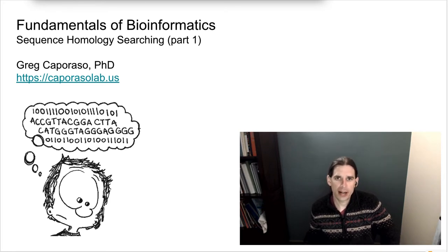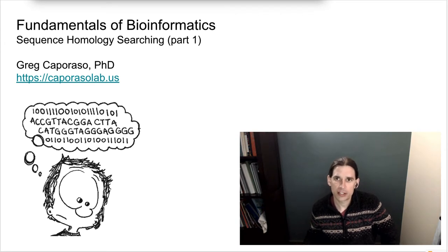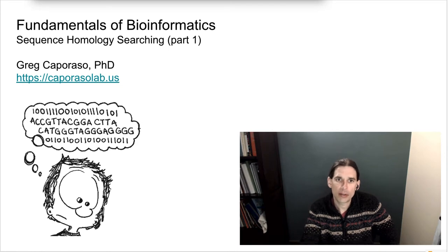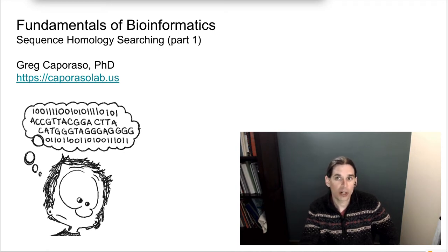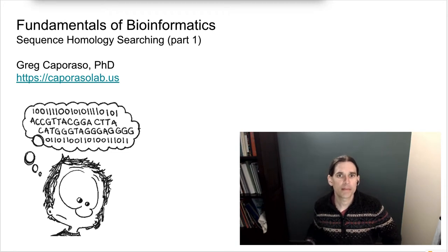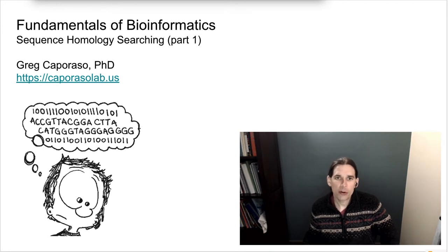We're going to begin by looking at an algorithm that does a complete sequence homology search against a database, and then we're going to explore some properties of that algorithm, including the runtime. After that, we'll look at variations on that algorithm that apply some tricks to get to the right answer in less time — we call those heuristic algorithms. Finally, we will wrap this up by talking about how to evaluate whether a pairwise sequence alignment is statistically significant.